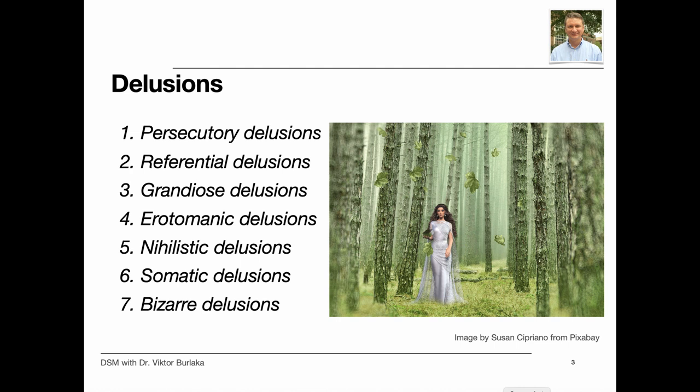These are also common. Grandiose delusions happen when an individual believes that he or she has exceptional abilities, wealth, or fame. Erotomanic delusions are those when an individual believes falsely that another person is in love with him or her. Nihilistic delusions involve the conviction that a major catastrophe will occur, while somatic delusions focus on preoccupations regarding health and organ function.